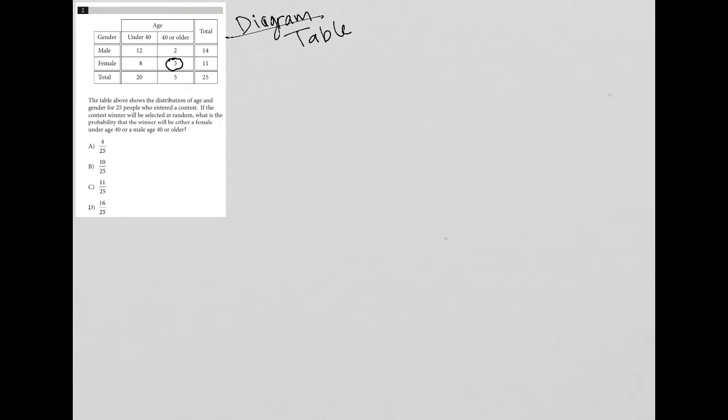And then if I can interpret what that number represents, I pretty much understand the entire table. So the three that I circled here is for females that are 40 or older. So this tells me that there are three females who are 40 or older. Again, understanding that means I pretty much understand the rest of the table.